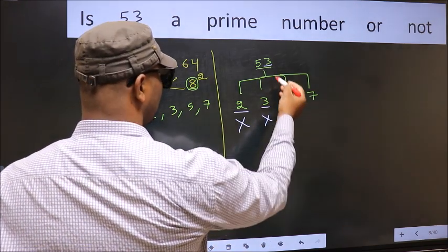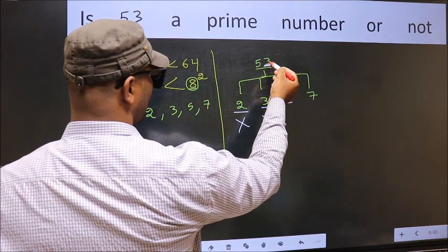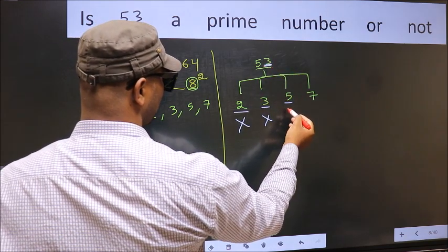Next, number 5. Last digit is neither 0 nor 5. So, this is not divisible by 5.